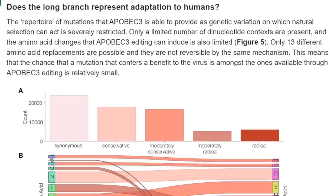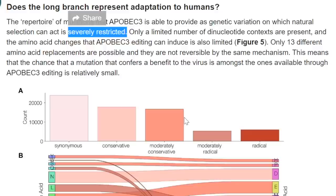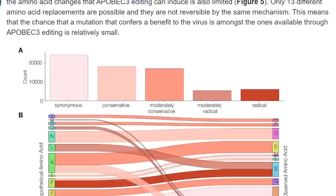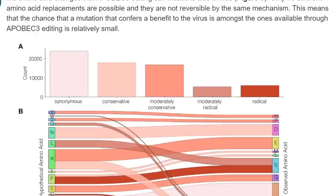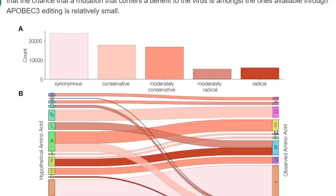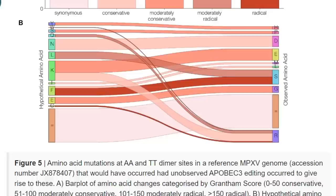The next question is whether APOBEC3 mutations are conferring gain of function to the virus. The authors examined the statistics and concluded that the repertoire of mutations APOBEC3 can provide is severely restricted — only a limited number of dinucleotide contexts are present, and only 13 different amino acid replacements are possible, and they are not reversible by the same mechanism. The chance that a beneficial mutation for the virus is among those available through APOBEC3 editing is very, very small — making gain of function through this mechanism extremely unlikely.